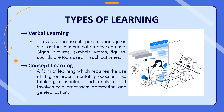Concept learning is a form of learning which requires the use of higher-order mental processes like thinking, reasoning, and analyzing. It involves two processes: abstraction and generalization. Abstraction is the process of removing characteristics from something to reduce it to a set of essential characteristics, while generalization is a form of abstraction whereby common properties of instances are formulated as general concepts. This type of learning is also known as category learning — a process by which experience allows us to partition objects into classes for generalization, discrimination, and inference.